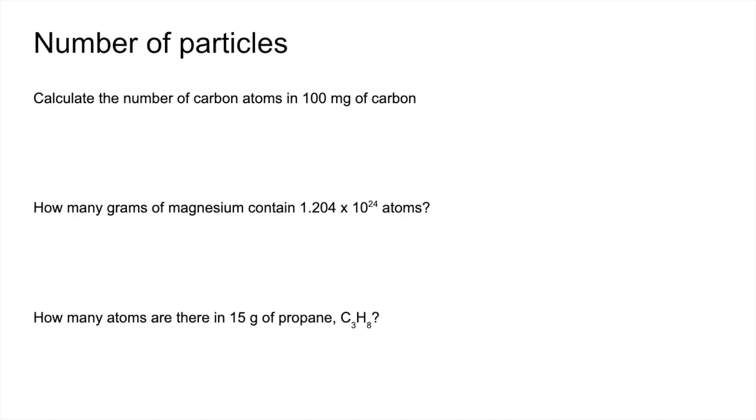So the first one, we've got 100 milligrams of carbon, so we're going to turn that into moles. So the moles of carbon is 0.1 grams divided by 12, so that's 8.33 times 10 to the minus 3 moles of carbon. And then to find out how many carbon atoms there are, we multiply by Avogadro's number, and we get an answer of 5.02 times 10 to the 21, and that's to three significant figures.